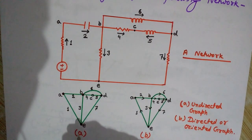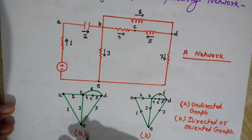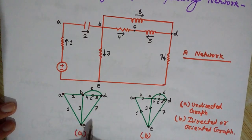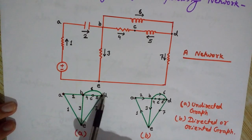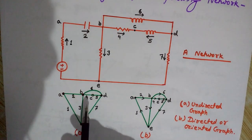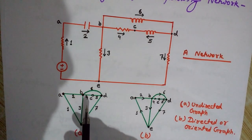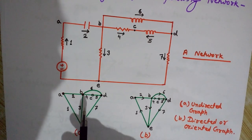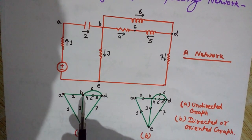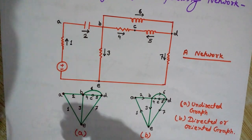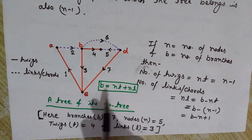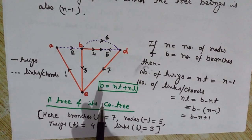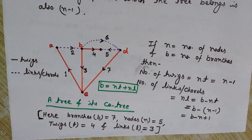A tree is simply a connected graph having no closed path. The closed paths shown in the original graph are not present in the tree. We can also define a tree as a connected graph that has a unique or single path between every pair of nodes. Let us now make a tree for this graph — a graph can have multiple trees.